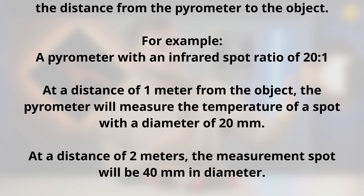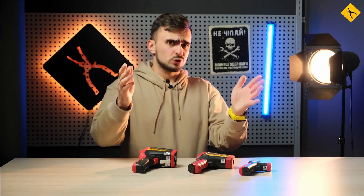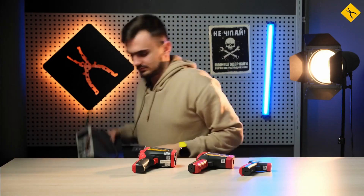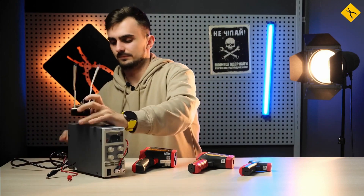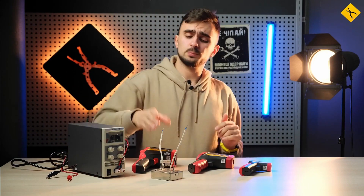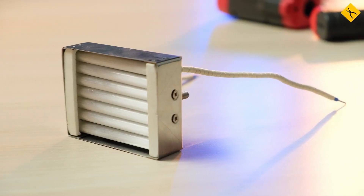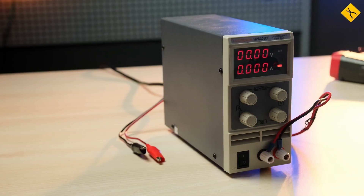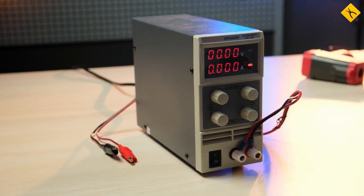At a distance of 2 meters, the measurement spot will be 40 millimeters in diameter. Well, we've covered the theory. Now, let's move on to practice and test all the pyrometers. We will be using this type of heating element, which will be powered by a power supply. And accordingly, we'll measure its readings.